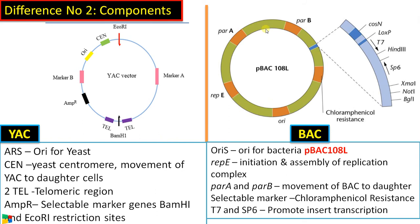BAC vector is having an origin of replication which is of bacteria. The original vector is pBAC108L, the first BAC vector. There are many modifications. Then there are replication sequences. This repE that is essential for initiation and assembly of replication complex inside the host.